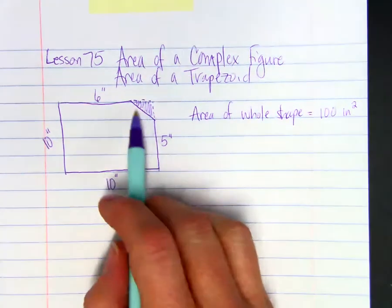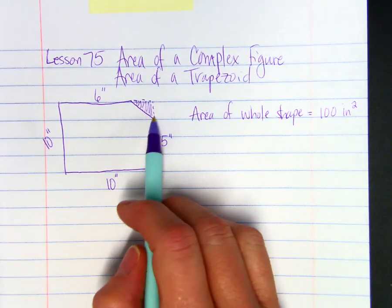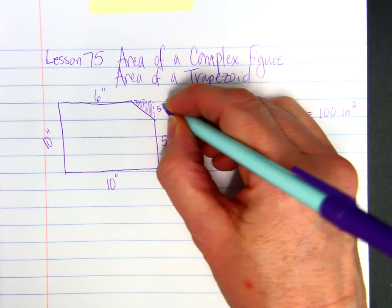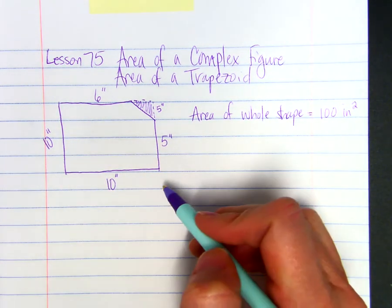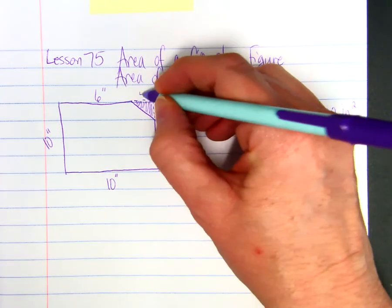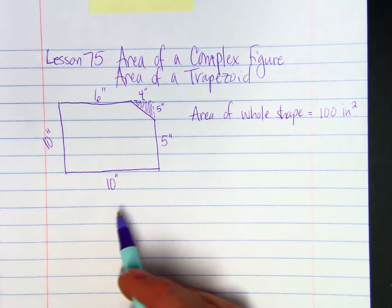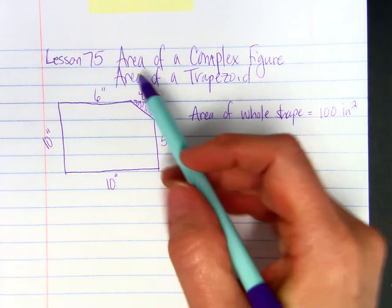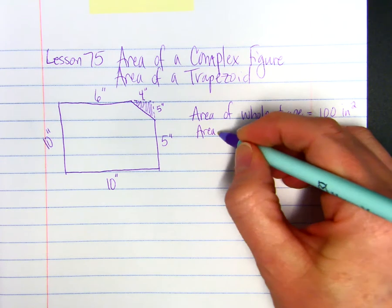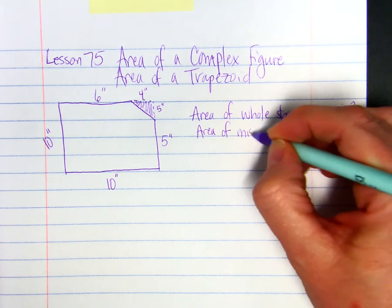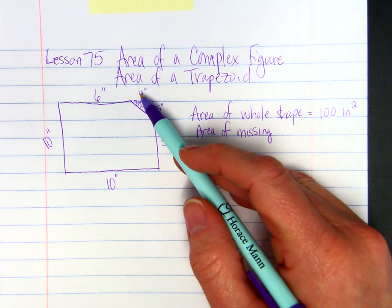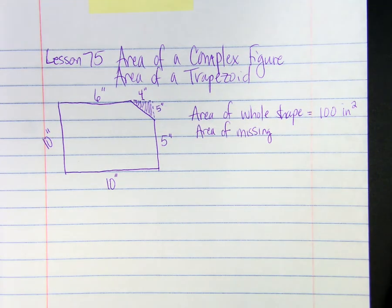Then if we take the area of this triangle that's missing, we know that this length would be 5 inches. I know this doesn't look anything like half of that, but that's okay. And we know this will be 4 inches. So if we take the area of this triangle, the area of the missing part, that's 5 times 4, which is 20, divided by 2,